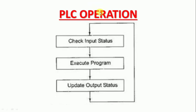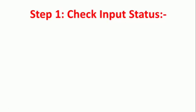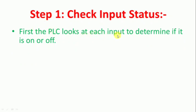This is the PLC operation. We will learn 3 steps in PLC operation. First, we will check the Input Status. Second, we will execute the Program. Third, we will update the Output Status. In the first step, the PLC will look at each input to determine if it is ON or OFF. For example, is the sensor connected to the first input, the second input, or the third input?